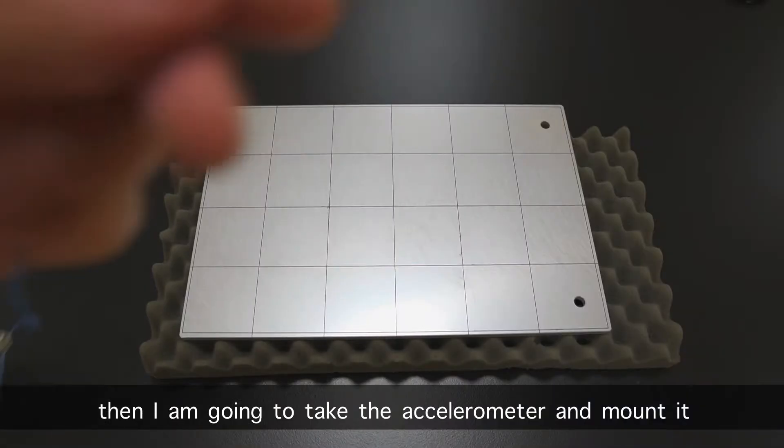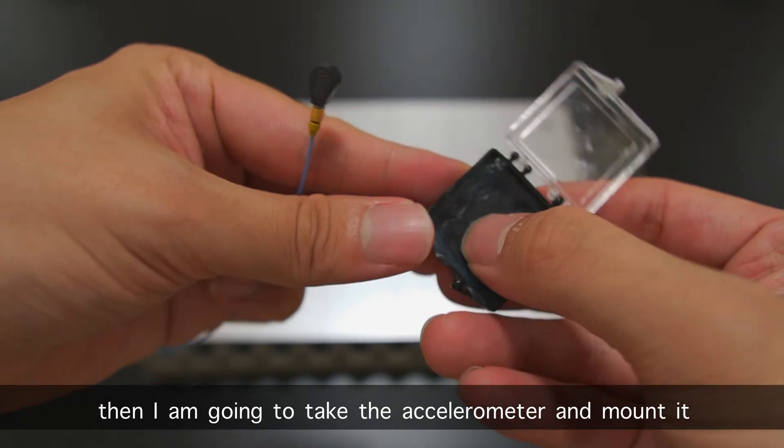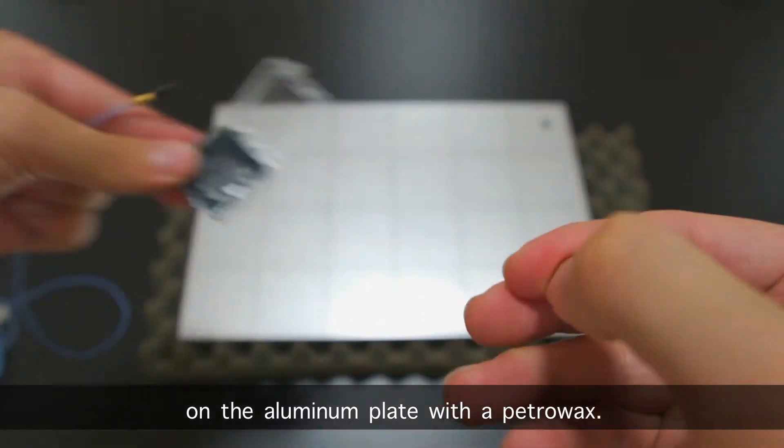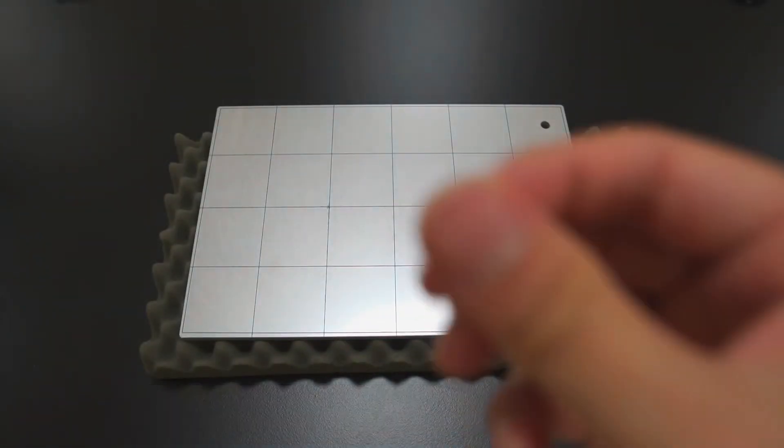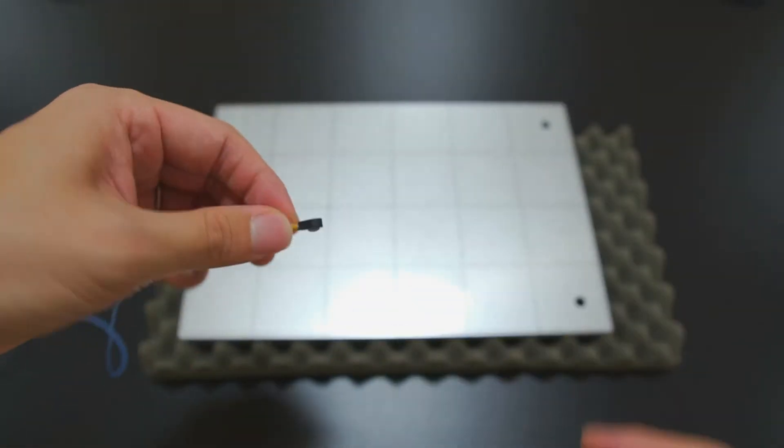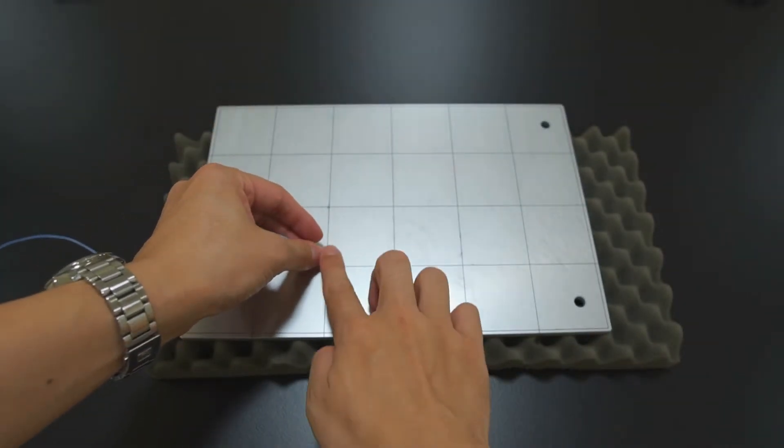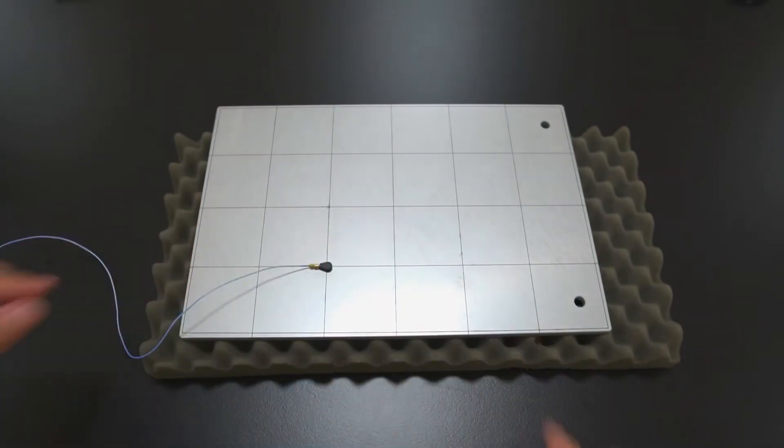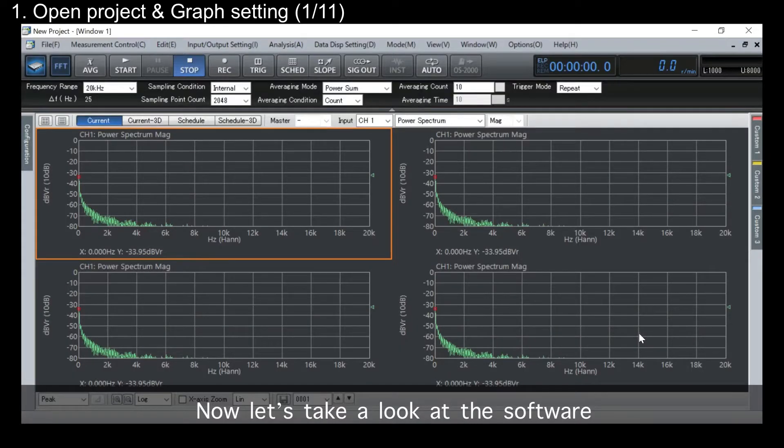Then, I'm going to take the accelerometer and mount it on the aluminum plate with petrol wax. Now, let's take a look at the software.